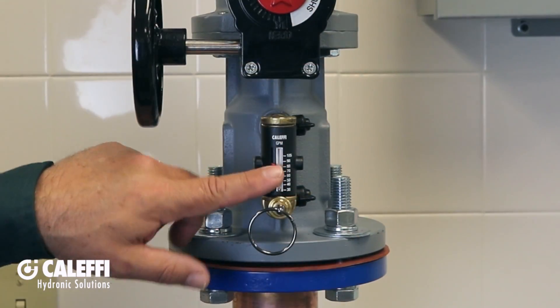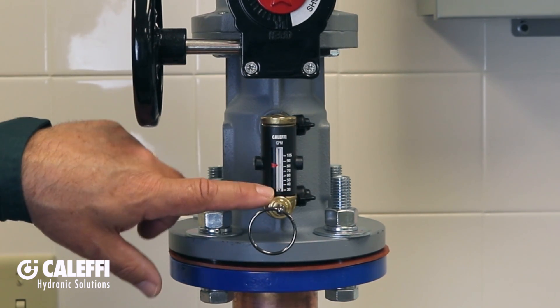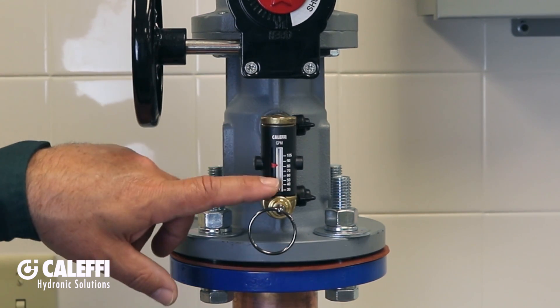On the front of the flow meter is the flow rate scale which reads directly in GPM. It's really nice. This little flow rate indicator steel bead at the bottom will move up and down in the window and it's